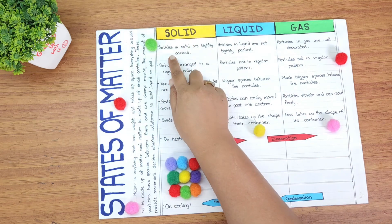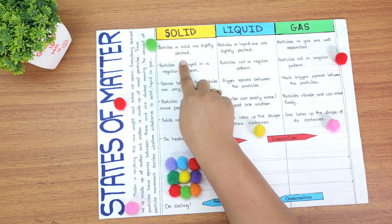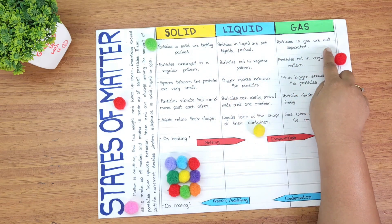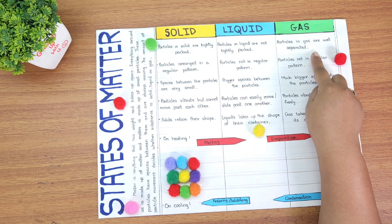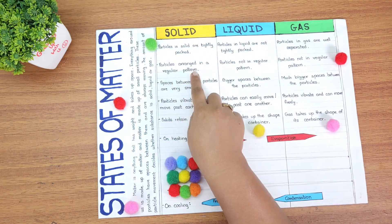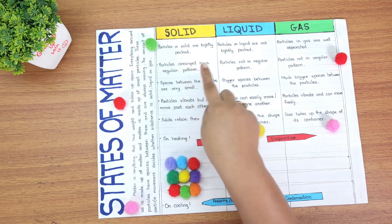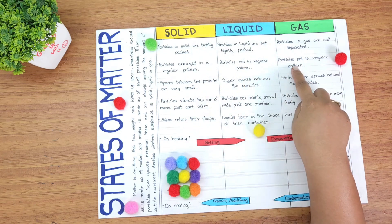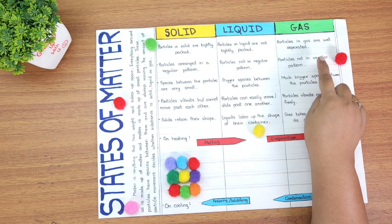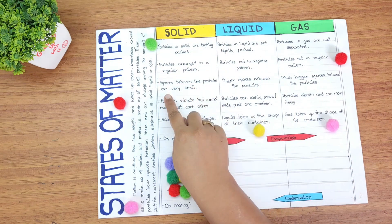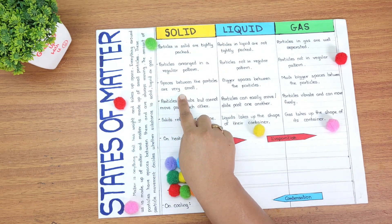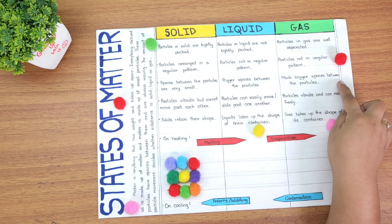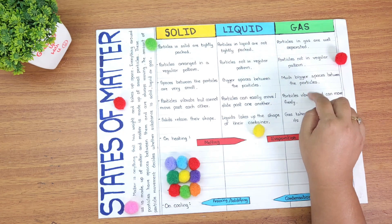Coming to solid, particles in solid are tightly packed. In liquid, the particles are not tightly packed, and particles in gas are well separated. Particles are arranged in a regular pattern in solid, and particles are not in a regular pattern in the gas. There are very small spaces between the particles in solid, bigger spaces in liquid, and much bigger spaces between the particles in gas.